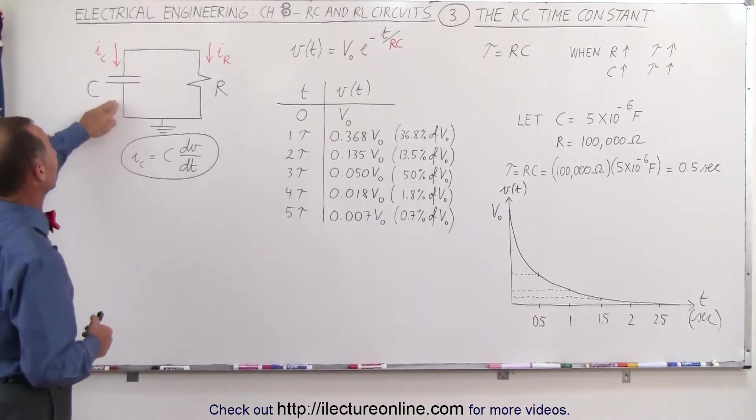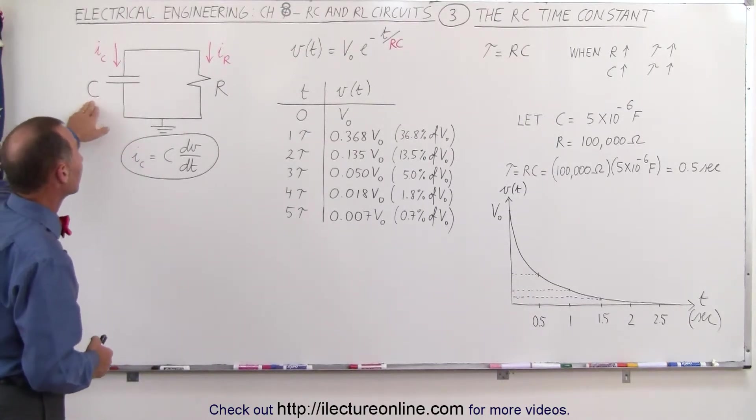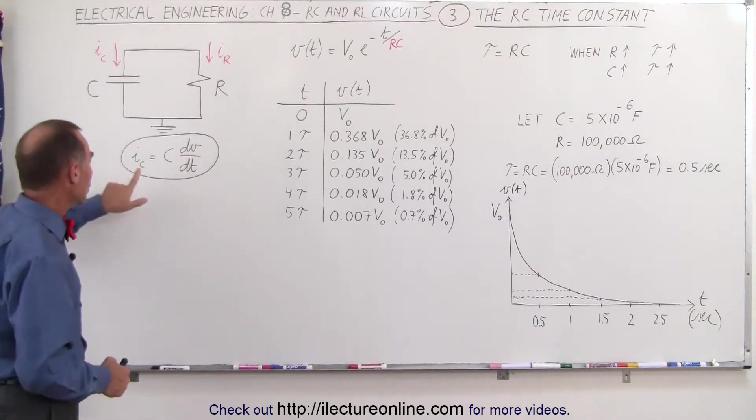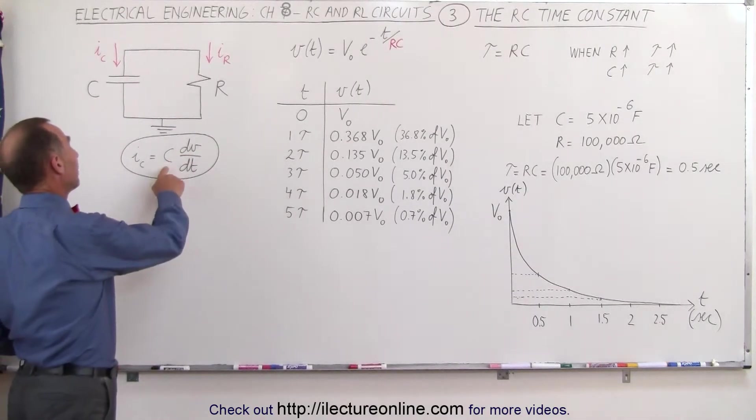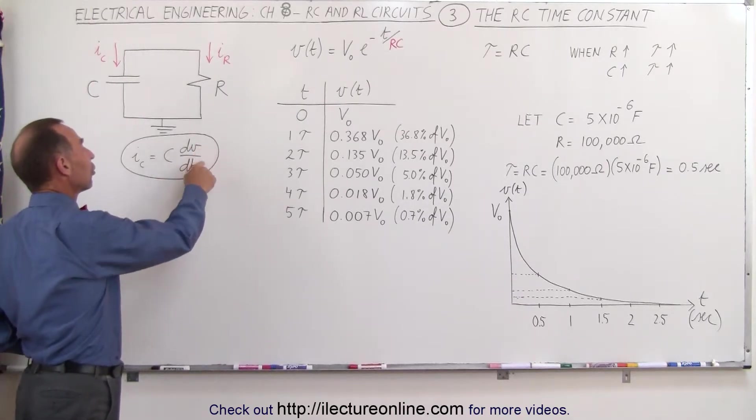Remember, an RC circuit is a circuit that contains a capacitor and a resistor, and we know that the current through the capacitor is defined by this equation, the capacitance times the change in the voltage over time.